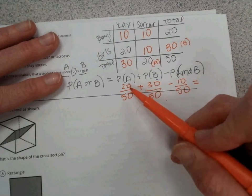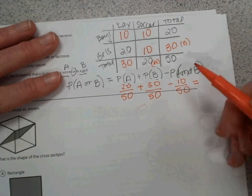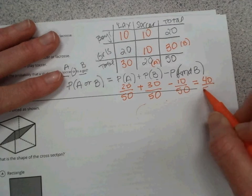So don't need the calculator, just add them up. 20 plus 30 is 50, minus 10 is 40, and the denominator stays the same.